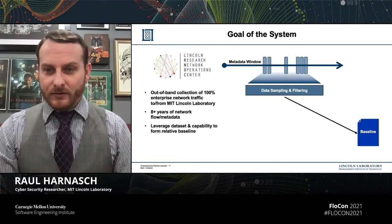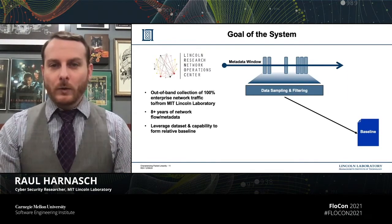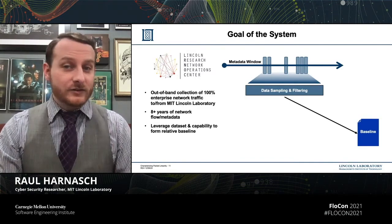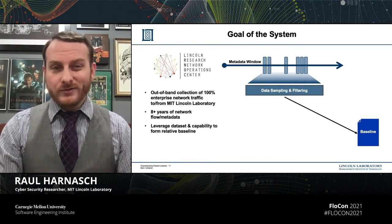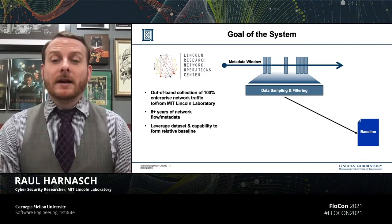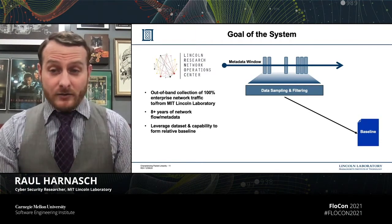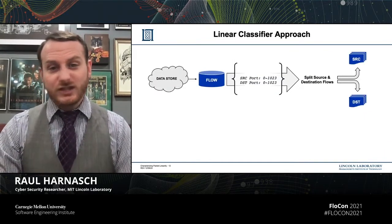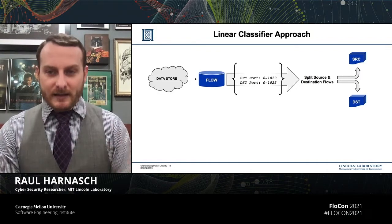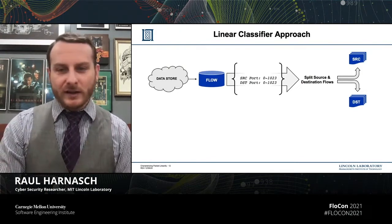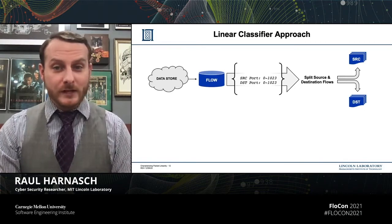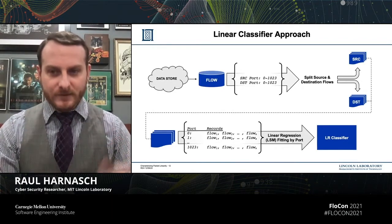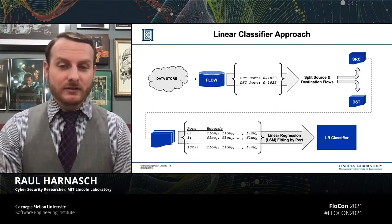I have access to lots of metadata throughout our research network operations center, which is collecting 100% of the enterprise network traffic coming and going from Lincoln Laboratory. We've collected about eight years of network flow data from those PCAPs. Because there are inherent linear characteristics, why not just start with some linear regression as a classifier and build that into a port dictionary? For the scope of this effort, we focused on the well-known ports for analysis at first — ports 0 to 1023 — taking in network flow records, pairing them down into unidirectional records, then building a port dictionary containing all ports and their packets and payload counts, feeding that into a linear classifier using least-squares linear regression.